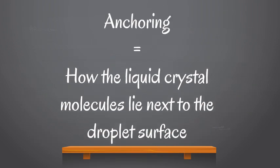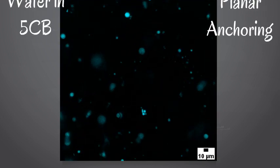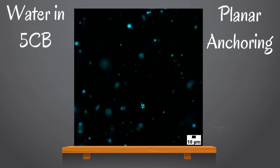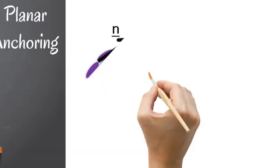Anchoring just means the way the liquid crystal molecules lay next to the droplet surface. Then, when we zoom back out, we can see all the little water droplets inside 5CB. This is with planar anchoring, and the emulsion here isn't that stable — you can see they all aggregate into little clusters.